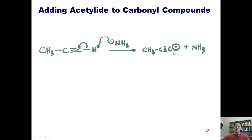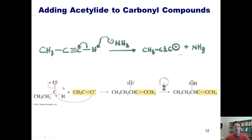These types of compounds — acetylides — can react with aldehydes and ketones, as shown here. The minus charge on the carbon comes into the carbonyl carbon and thrusts these electrons up onto the oxygen, giving this intermediate. When we protonate that oxygen with an acid source, we then get this kind of alcohol, which is really cool. It's a secondary alcohol that has an alkyne adjacent to it. The proton source shown here is pyridinium, but you can use other acids as well.